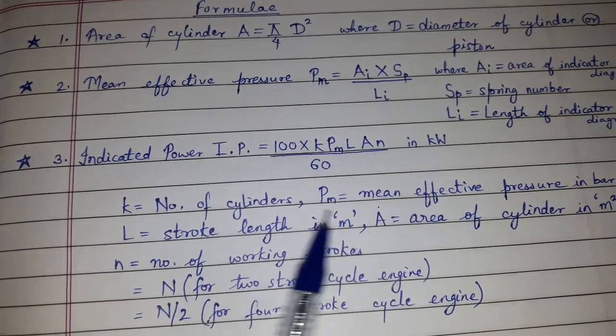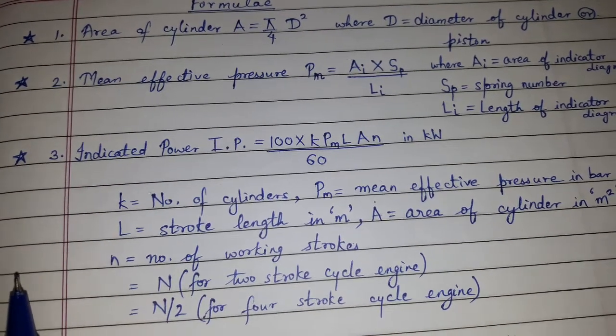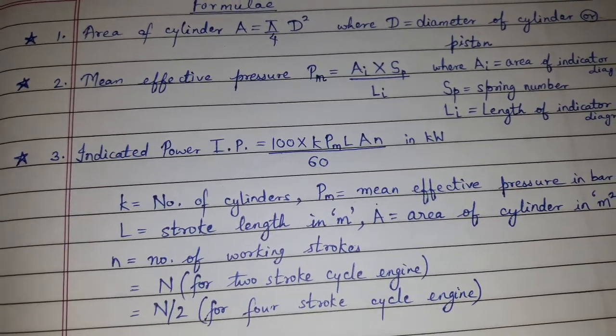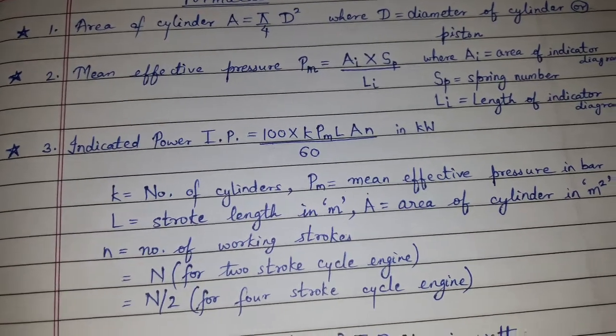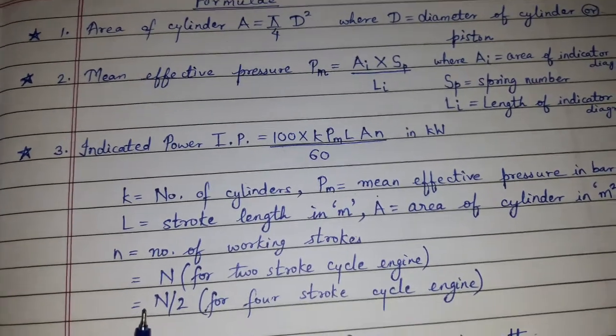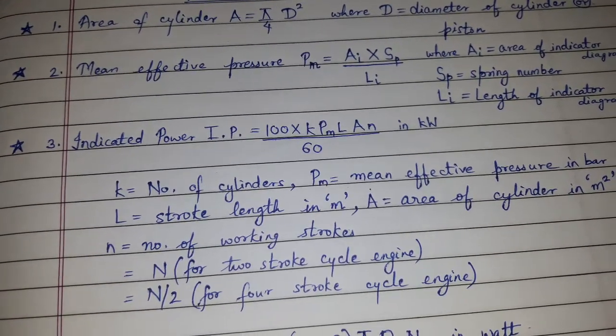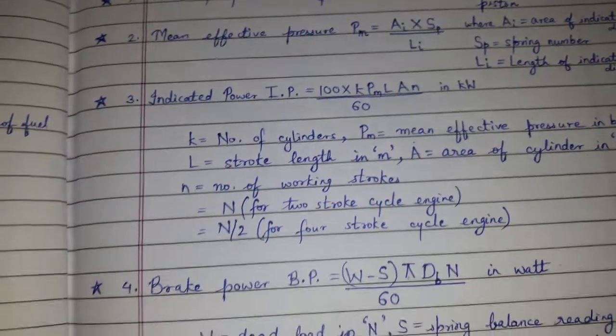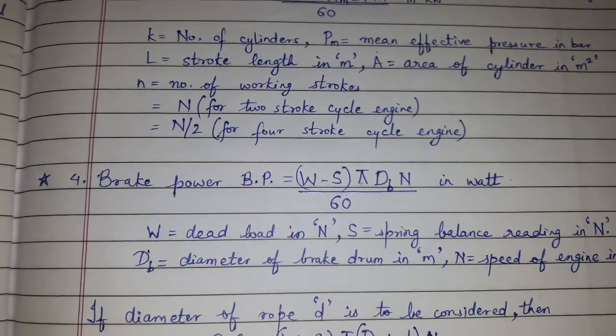Capital A is the area of cylinder in meter square, small n is equal to number of working strokes which is equal to capital N for 2-stroke cycle engine and which is equal to N/2 for 4-stroke cycle engine.